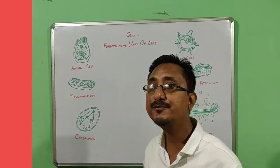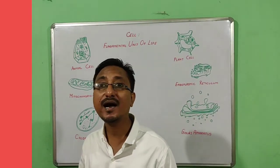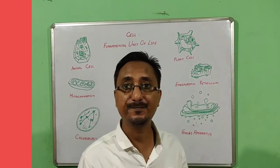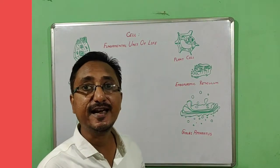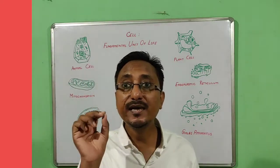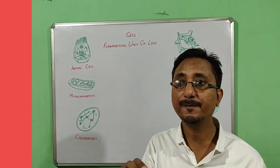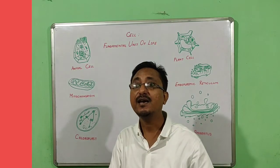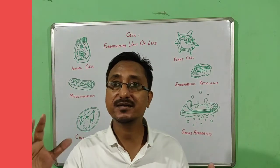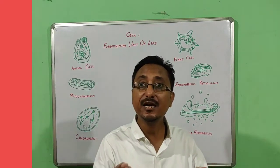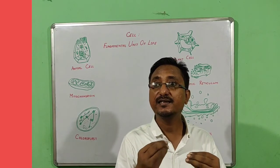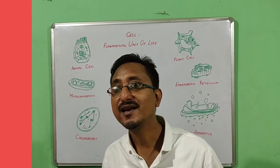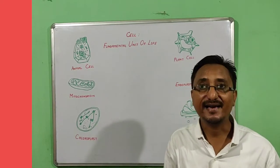Thus, lysosomes form a kind of garbage disposal system of the cell. During breakdown of cell structure, when the cell gets damaged, lysosomes may burst and the enzymes eat up their own cells. Therefore, lysosomes are also known as suicide bags.